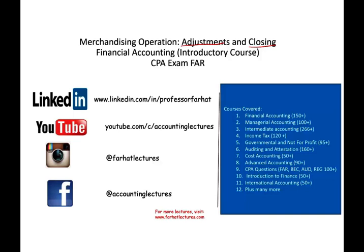The only difference is now we have an inventory account and we might have to make an adjustment. We're going to look at one adjustment, but all the other adjustments still apply. Also the closing process — the four steps: close revenue to income summary, close expenses to income summary, close income summary to retained earnings, and close dividends to retained earnings — still applies for merchandising operations, except we have a few new accounts we'll look at shortly.